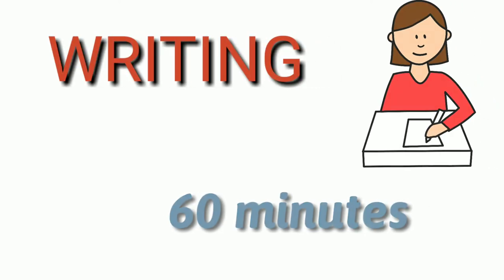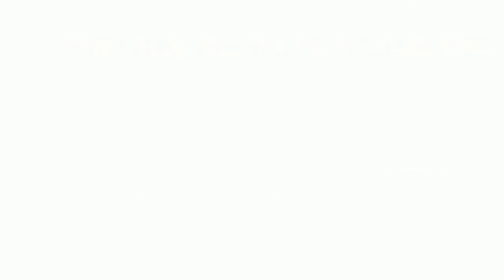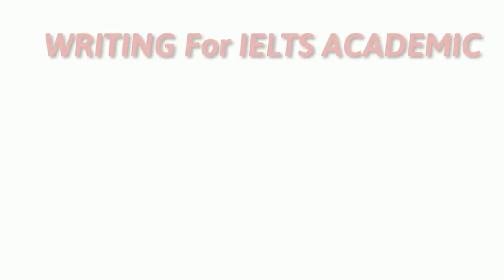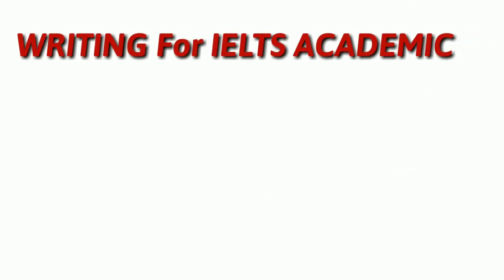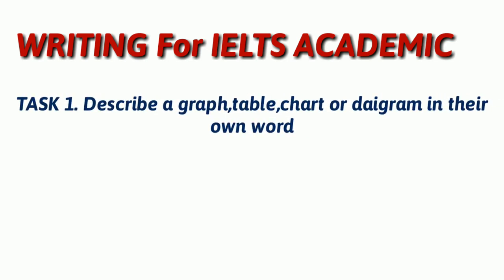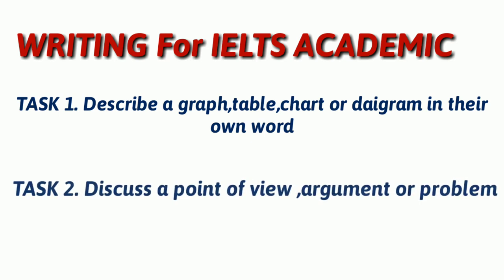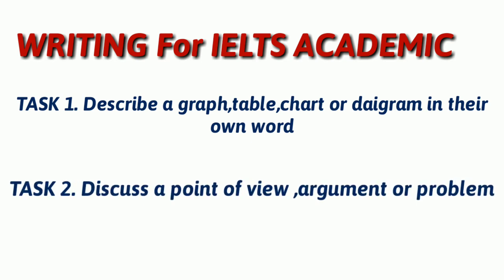The Writing module consists of 60 minutes. For IELTS Academic, it consists of Task 1, where you have to describe a graph, table, chart, or diagram in your own words, and Task 2, in which you have to discuss a point of view, argument, or a problem.